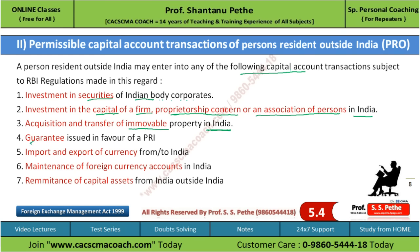Fourth, guarantee issued in favor of PRI. Fifth, import and export of currency from and to India. Sixth, maintenance of foreign currency account in India. Seventh, remittance of capital assets from India to outside India. Again, direct questions can come on this - what are the permissible capital account transactions for PRO? So all seven points you need to memorize well and write in the exam, or cases can also come on this.